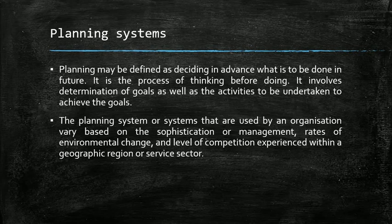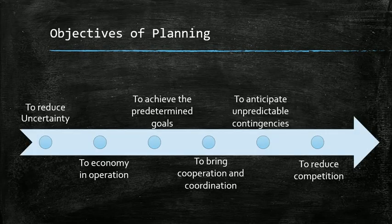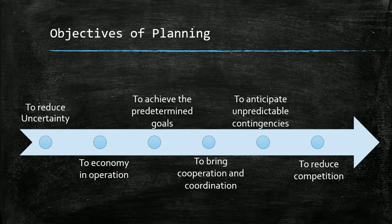Before working on that, let us move towards the objectives of planning — what we keep in mind before setting up a planning system. The first thing to keep in mind is that a planning system should reduce your uncertainty. Since the future is uncertain, you need to predict certain problems you will face and prepare a set of solutions for them.